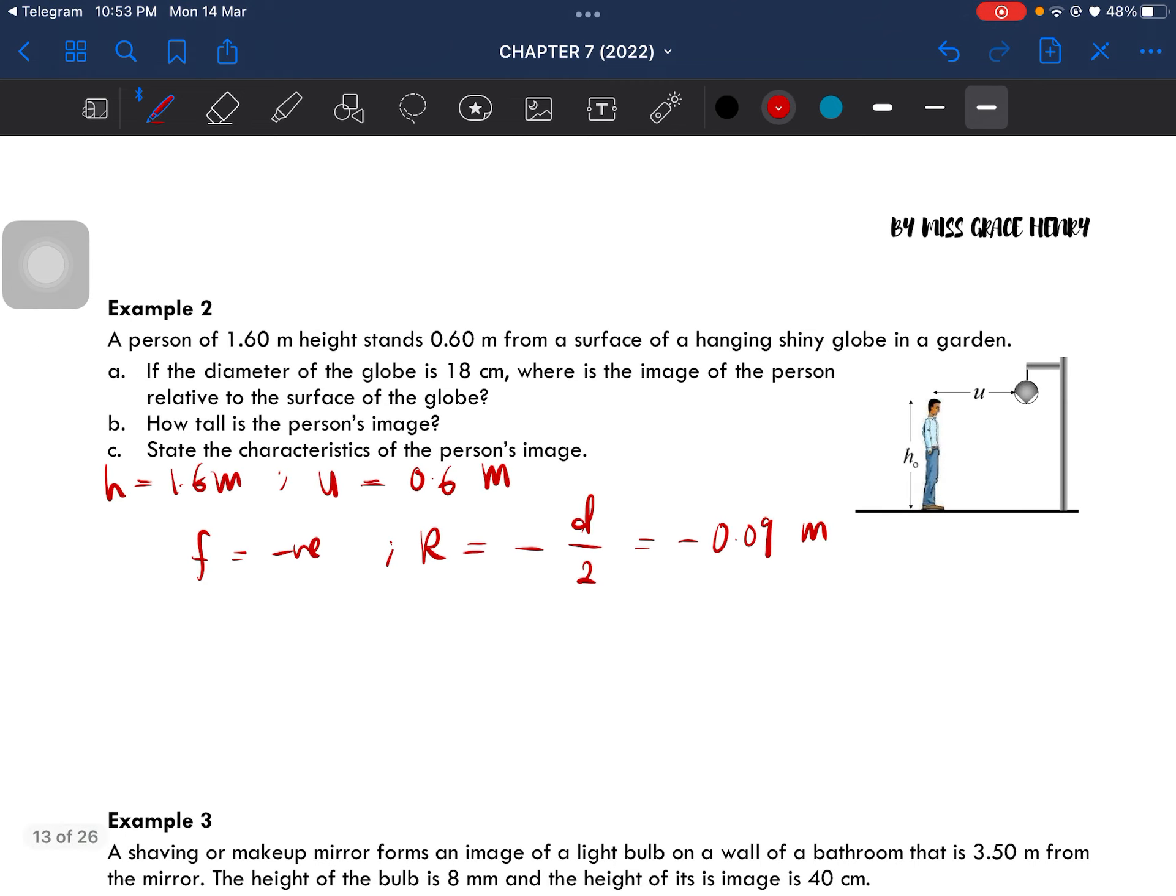Now we can apply the mirror's equation, which is 2 over R equal to 1 over U plus 1 over V. This is question A. You would get the image to be equal to negative 0.042 meter,